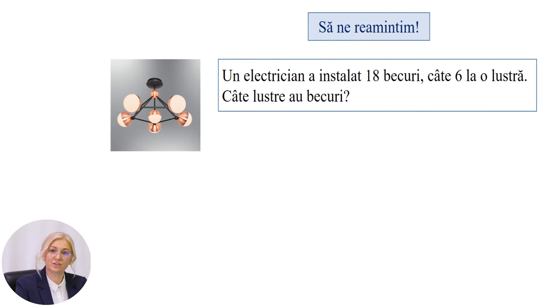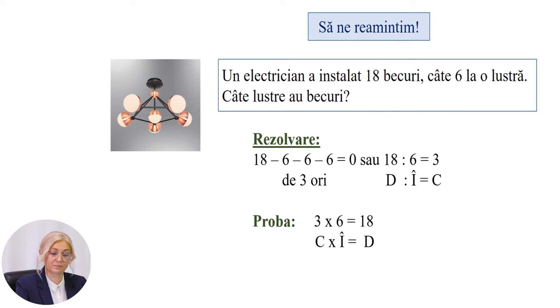Un electrician a instalat 18 becuri, câte 6 la o lustră. Câte lustre au becuri? Cum putem afla? Să ne reamintim cum are loc scăderea repetată. 18 minus 6 de 3 ori sau 18 împărțit la 6 este egal cu 3, în care 18 este de împărțitul, 6 împărțitorul și 3 câtul. Proba: 3 înmulțit la 6 este egal cu 18. Răspuns: 3 lustre.